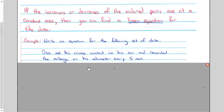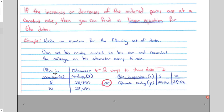Write an equation for the following set of data. They might give you a scenario like this. Dan set his cruise control on his car and recorded the mileage on his odometer every five minutes. Here is two different ways that we can show this table. Here is your more traditional vertical XY table, two columns. Here would be a horizontal way. And do you notice that I actually have an X and a Y written there? Usually, I would say the column on the left is your X variable.